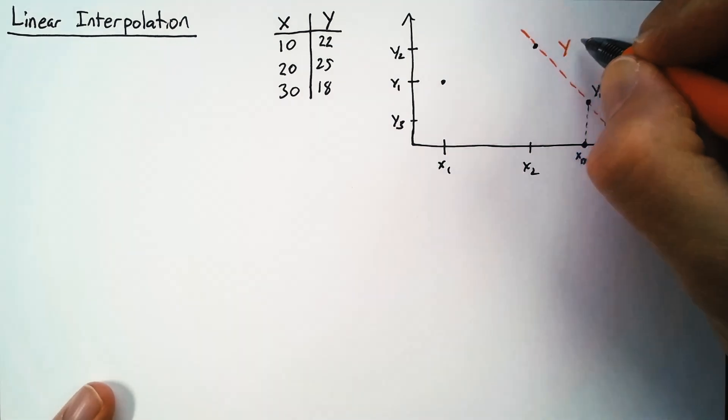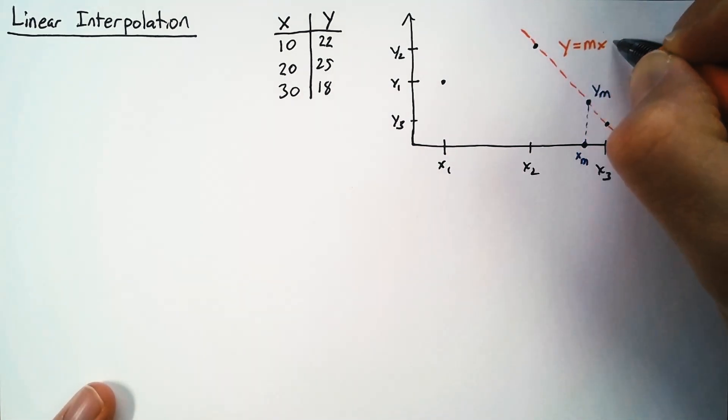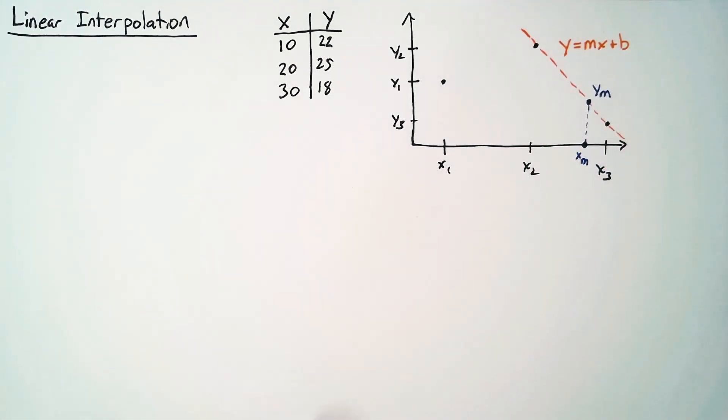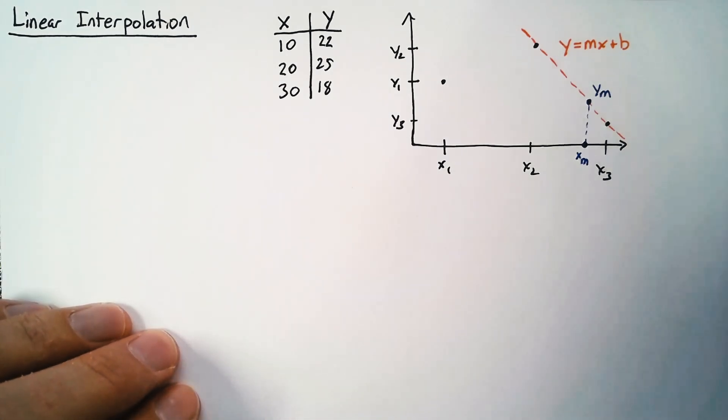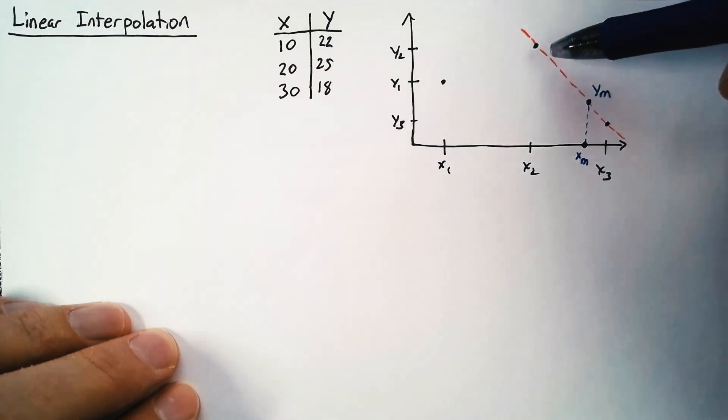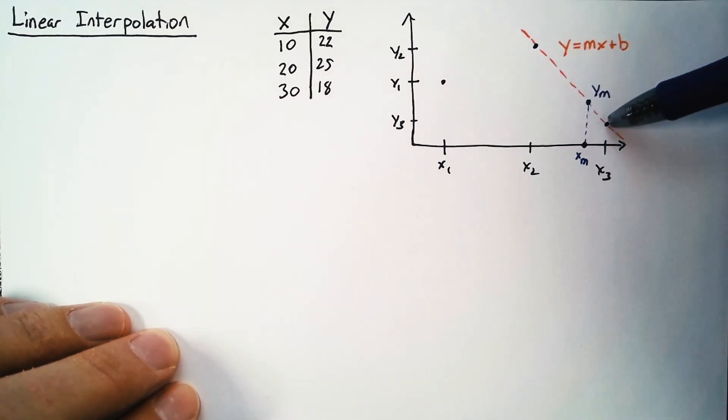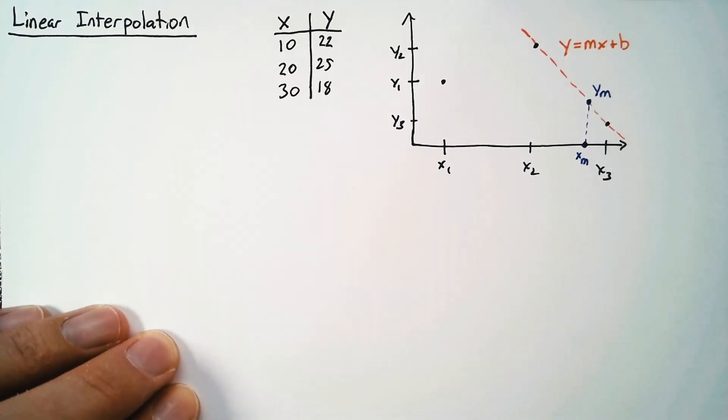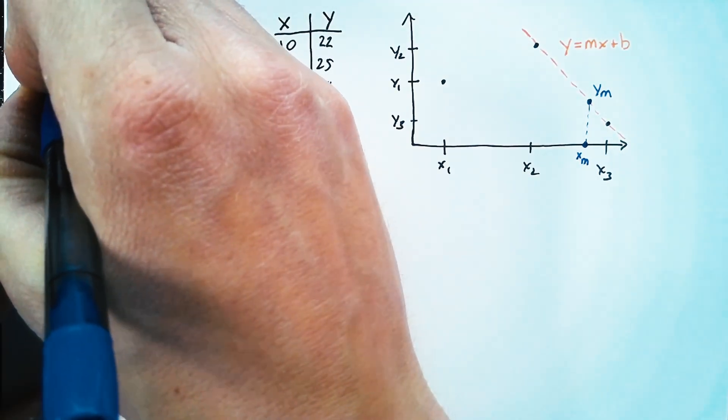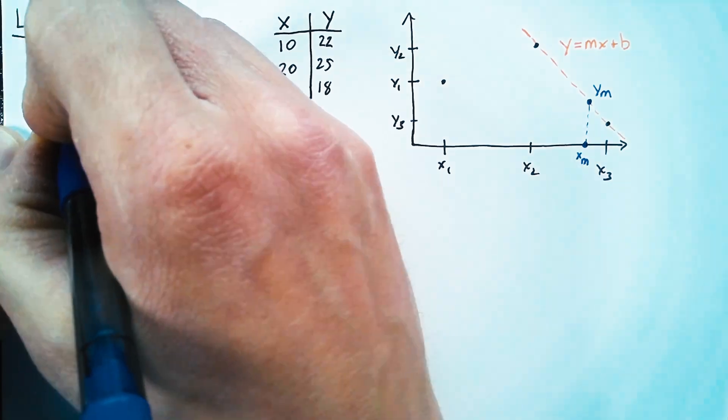Now the question is, how do we figure out what m and b are for this line? Well, we know that this line intersects two points. It intersects x2, y2, and x3, y3. So what that does for us is it gives us two equations that we can use to solve for m and b.